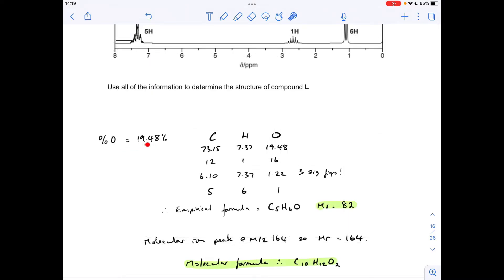So I've got all that there. The percentage oxygen came out at 19.48%, so we put the percentages in the table for carbon, hydrogen, oxygen, divide by the relative atomic masses, that gives us the moles. Remember these need to be quoted to three significant figures, divided by the smallest, which is obviously that one, you get the 5 to 6 to 1 ratio.